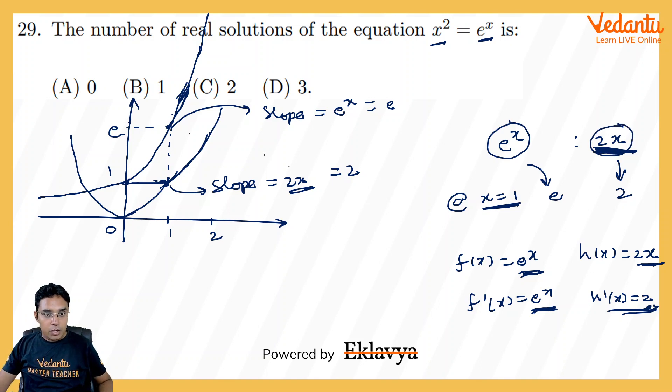So what we can expect that e power x will always be bigger than 2x. And hence, you cannot increase the slope of this graph x square more than e power x and we will be getting this graph becoming out of reach to this x square. So there will be only one solution. So answer for this question has to be B.